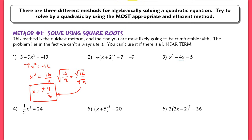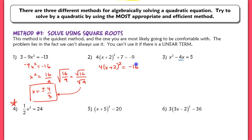I'm going to skip and have you do number 4 by yourself. It's very similar to number 1, so you can pause the video and try that one and check with the key. I'm going to do number 2 with you. You want to isolate number 2 so that you have the quadratic term isolated, then divide by the 4.